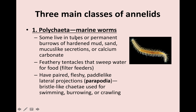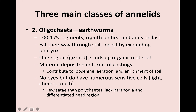Three main classes of annelids: Polychaeta, or the marine worms — feathery in appearance, they are filter feeders. You really don't need to know much about the marine worms for this exam. Oligochaeta are the earthworms. They pretty much eat their way through soil, and they have a region inside called a gizzard that grinds up organic material. You'll see that on your earthworm dissection after this exam. Material deposited forms castings that help enrich the soil, loosen the soil, and allow air to get into the soil. They do not have eyes, but they do have numerous sensitive cells for light, chemicals, and touch.